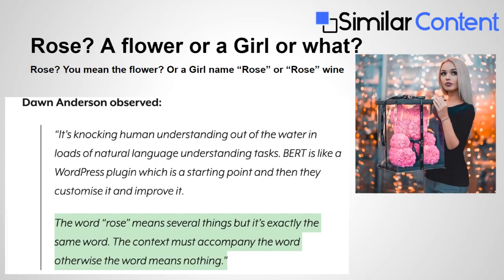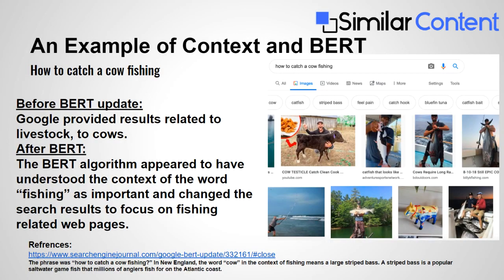For example, the word 'rose' might mean a flower, a girl's name, or a color. Google understands this through context. Before the BERT update, searching 'catch cow fishing in New England' would show images of cows, because Google didn't understand 'cow' in a fishing context as a large striped bass. After the BERT update, Google understood the context of 'cow fishing' and showed correct results.